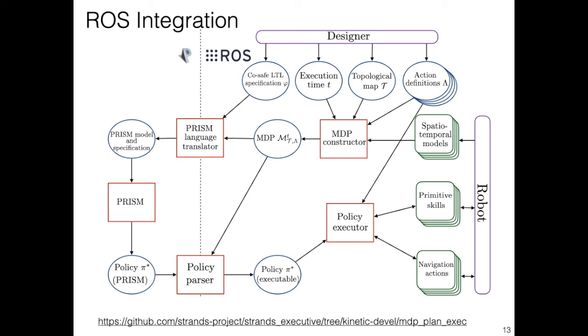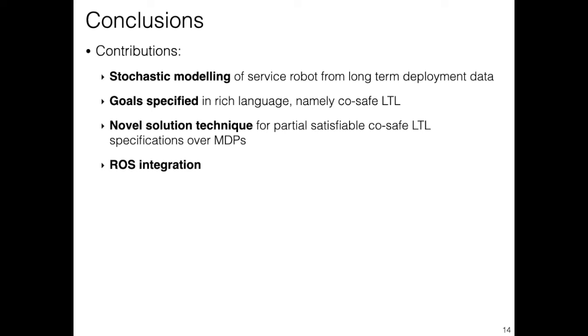Our approach is implemented in the PRISM model checker and integrated in ROS for execution in real robots. The code is open source and available online.